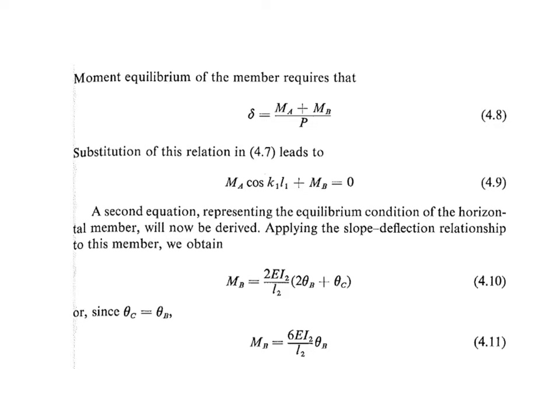Introducing another equilibrium condition — moment equilibrium — gives delta = (MA + MB)/P. Substituting this into the previous equation leads to MA cos(K₁L₁) + MB = 0. We then introduce the slope-deflection relationship, which gives MB = (2EI₂/L₂)(2θB + θC). Since θB = θC for a rigid frame condition, this simplifies to MB = (6EI₂/L₂)θB.